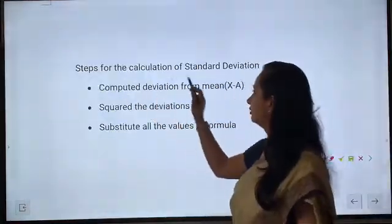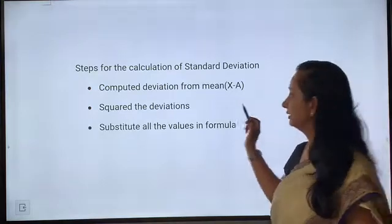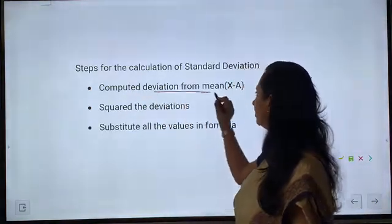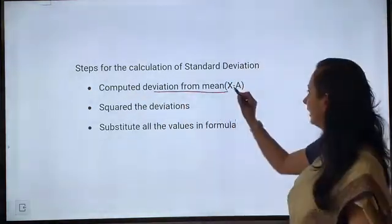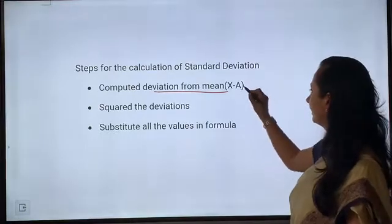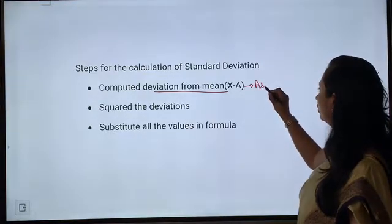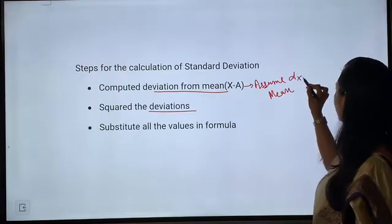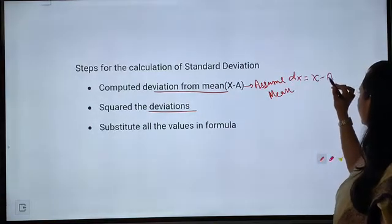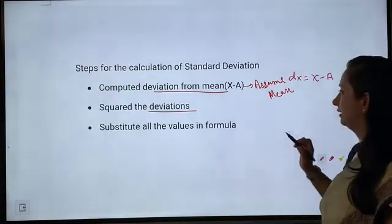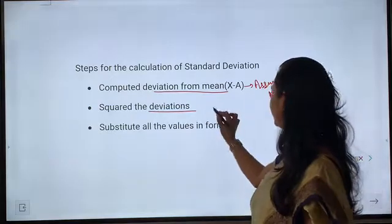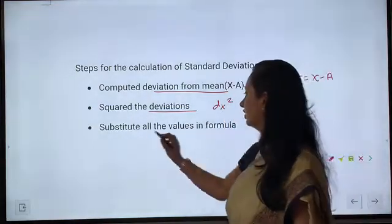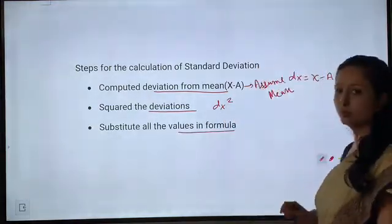Steps for calculation of standard deviation: First, compute deviation from assumed mean, that is dx = x minus a, where a is the assumed mean. Second, square the deviations to get dx². Third, substitute all the values in the formula.